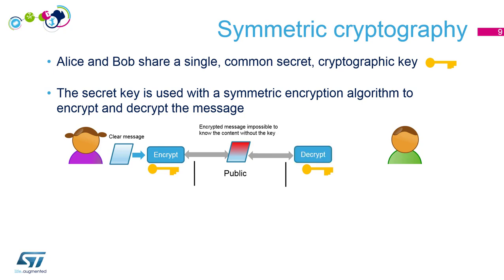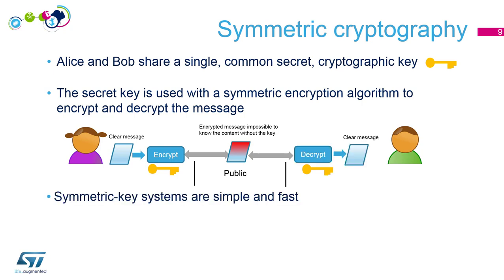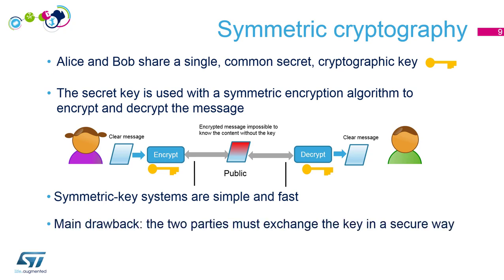Bob has this key. He can decrypt the message and get access to the clear contents. Symmetric key systems are simple and fast — you can encrypt a huge volume of data with really good performance. But the main drawback is that before exchanging any data, you need to exchange the key and do it in a really secure way. You must ensure that Eve doesn't manage to intercept this key.